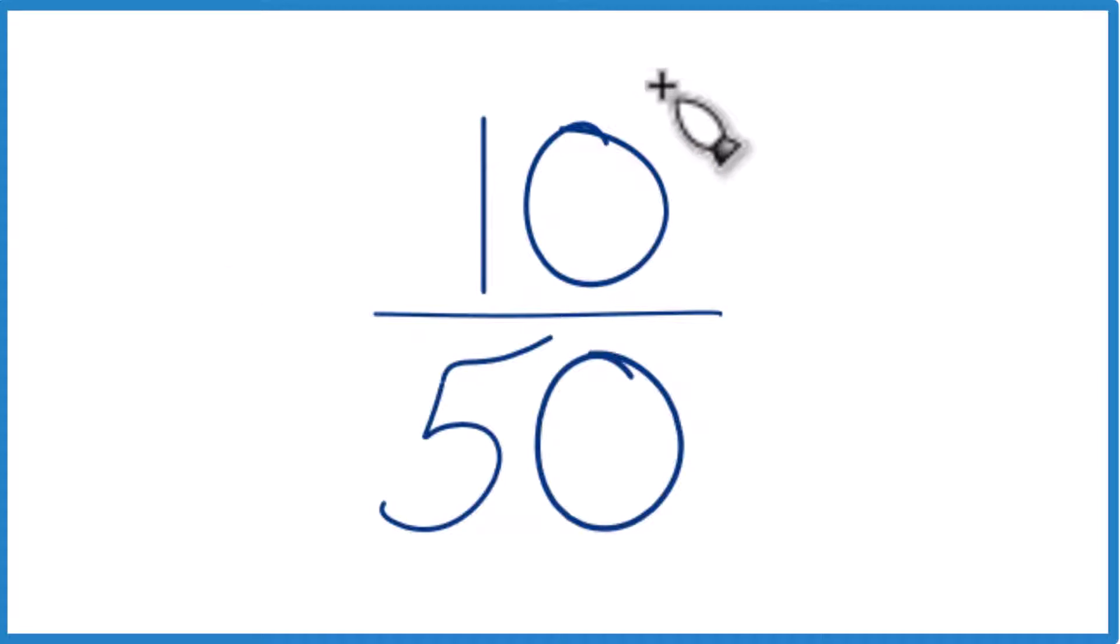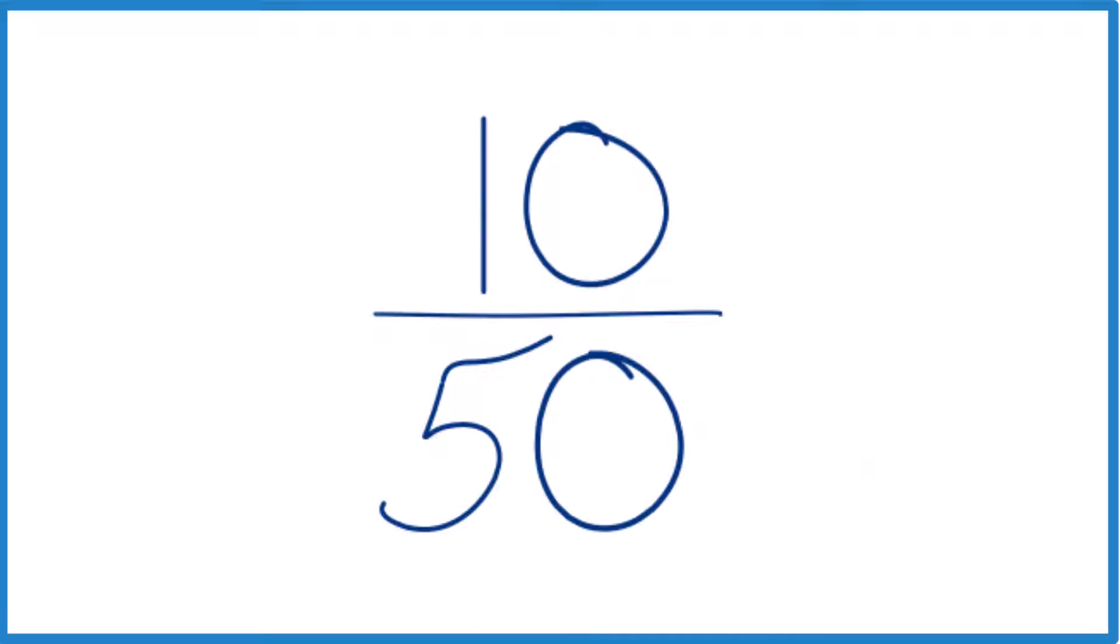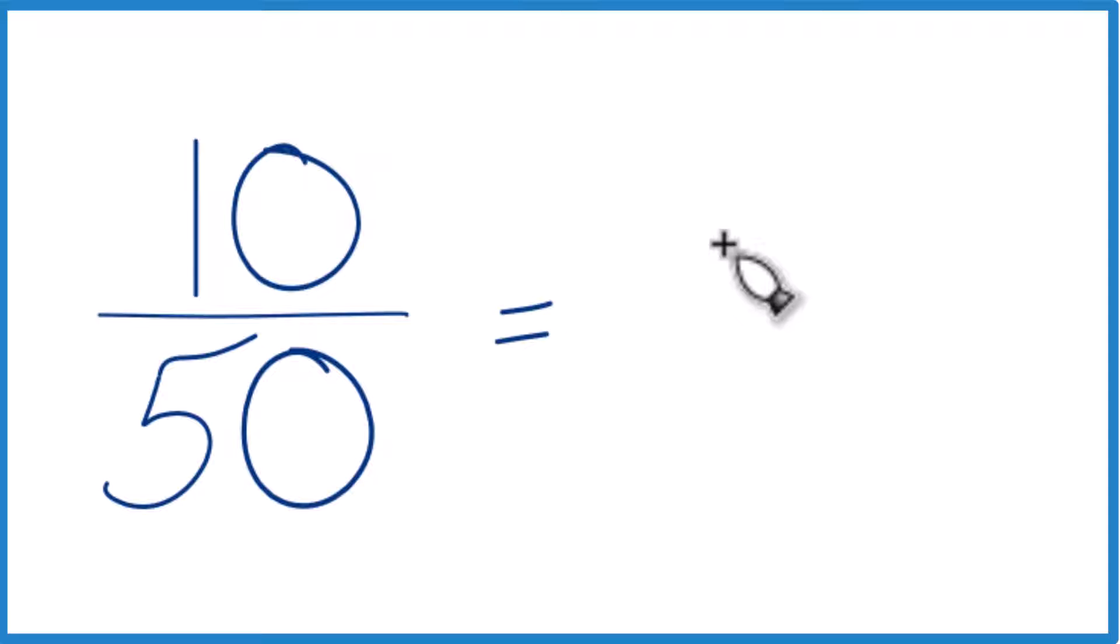So let's convert the fraction here. We have 10 fiftieths, and we want to get this to a decimal. So you could just divide 10 by 50 on a calculator, and you'd end up with 0.20.